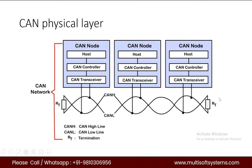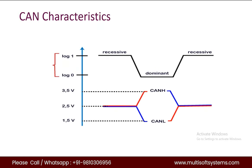The bus is terminated with 120 ohm resistors. That is how the data is transmitted through the CAN bus. After that we have CAN characteristics.